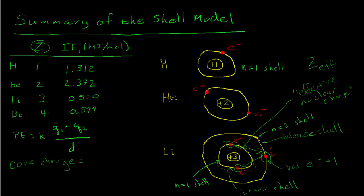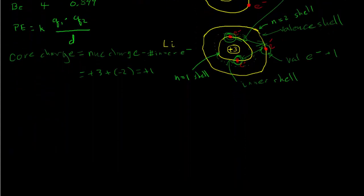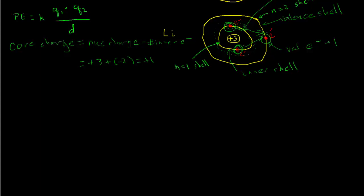Core charge approximates the effective nuclear charge. Core charge is the net charge of the nucleus plus all inner shell electrons. The formula is: core charge = nuclear charge minus the number of inner shell electrons. For lithium, the nuclear charge is plus three, minus two inner shell electrons (each minus one), giving an overall core charge of plus one. You must count all electrons on all inner shells. Notice an interesting pattern: the number of valence electrons in lithium equals the core charge, and it turns out this is generally true.